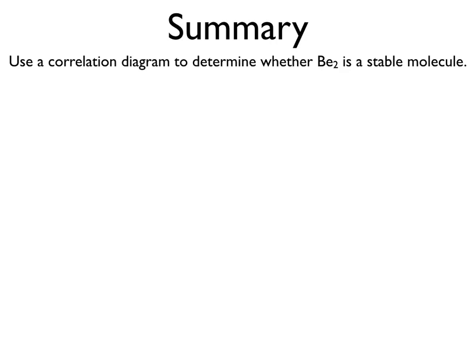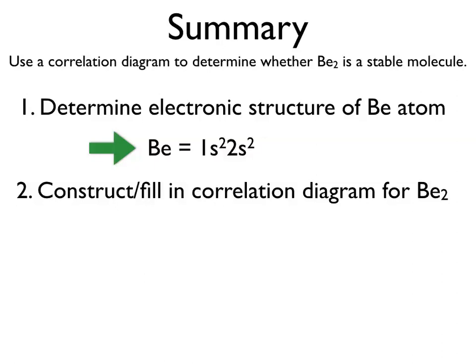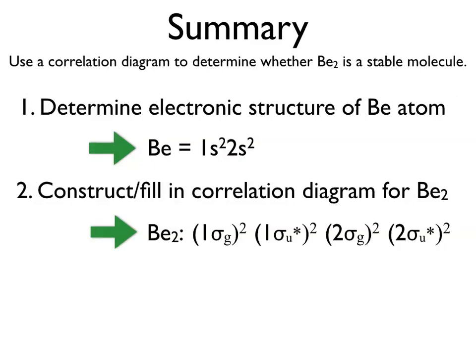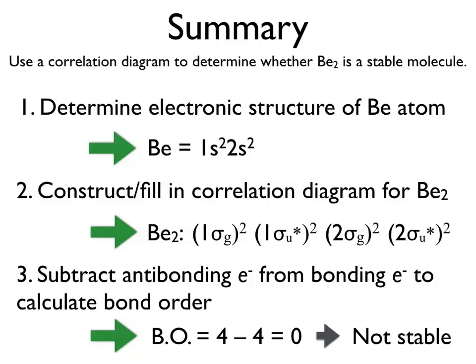In summary, to use a correlation diagram to determine whether a molecule is stable: first determine the electronic structure of the atoms involved — in this case 1s² 2s² for beryllium. Then construct and fill in the correlation diagram to determine the molecular electronic structure. Finally, subtract the anti-bonding electrons from the bonding electrons to calculate bond order, which in this case was zero, meaning no bond exists between the two atoms and therefore no molecule forms.